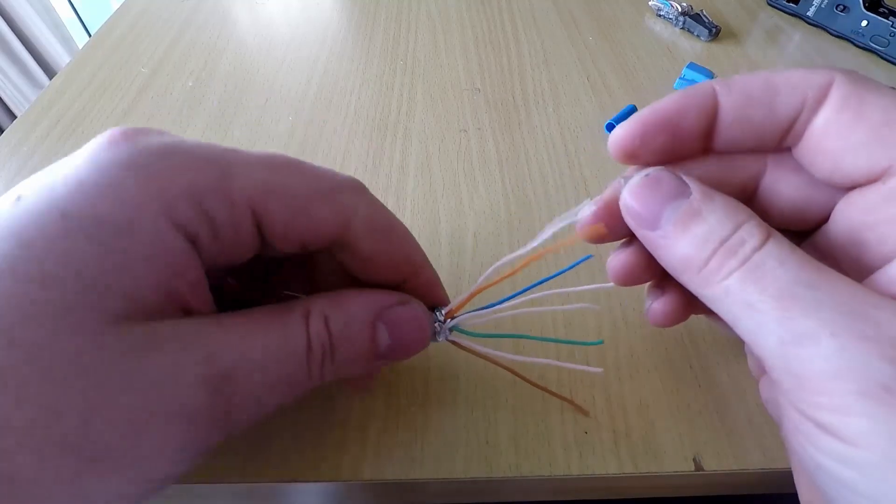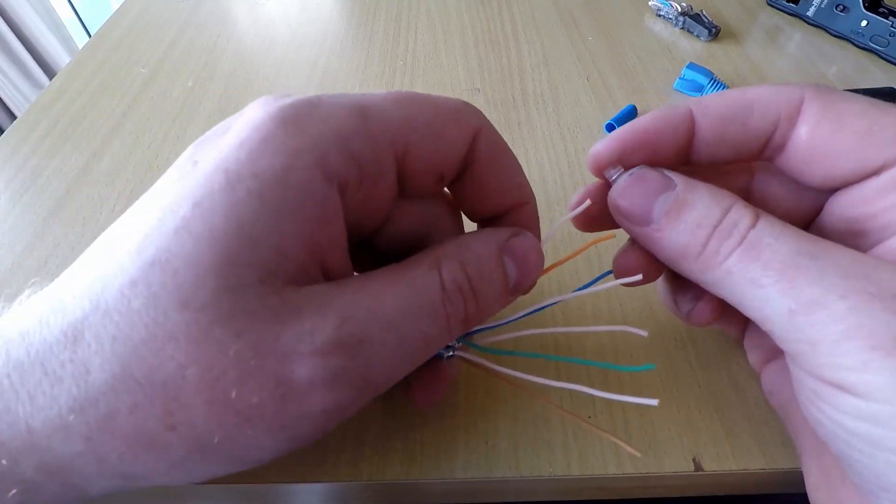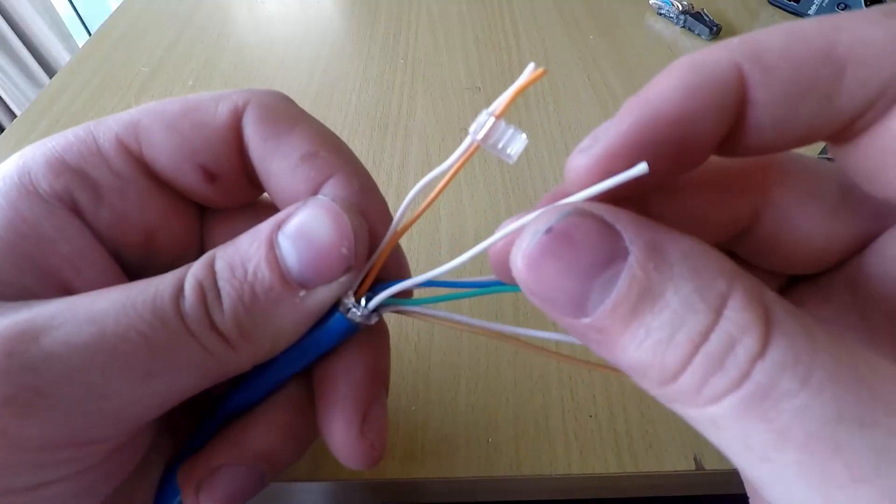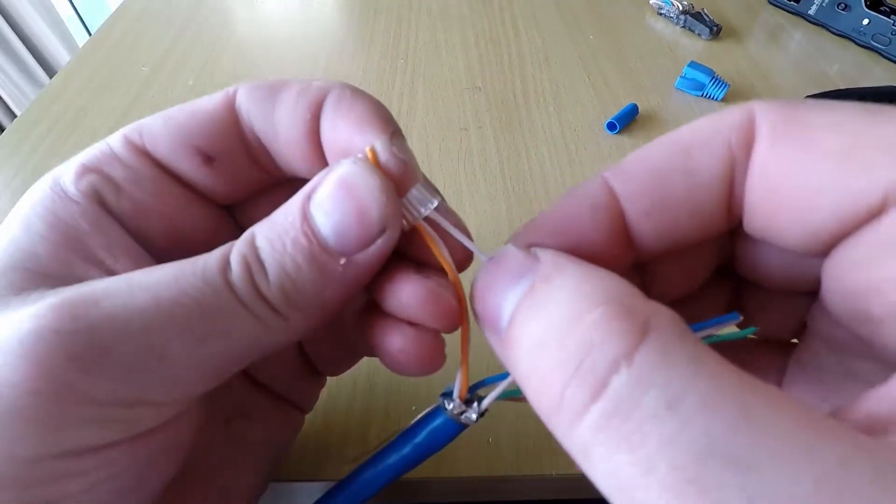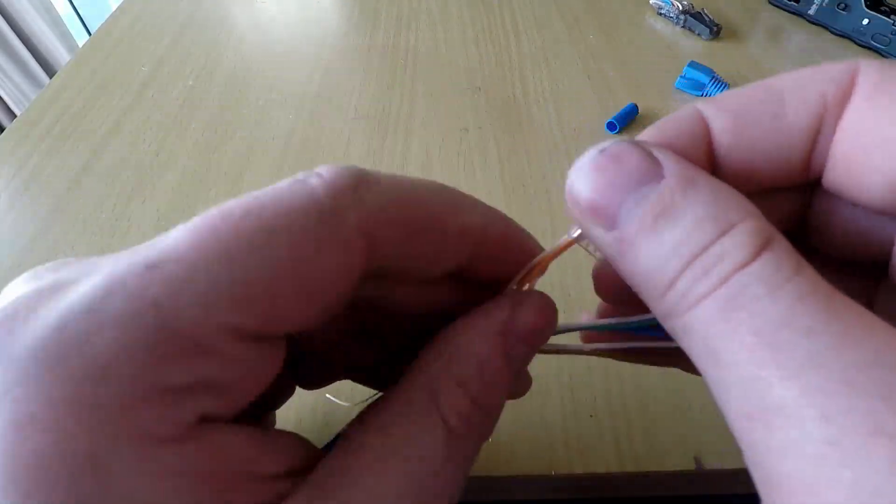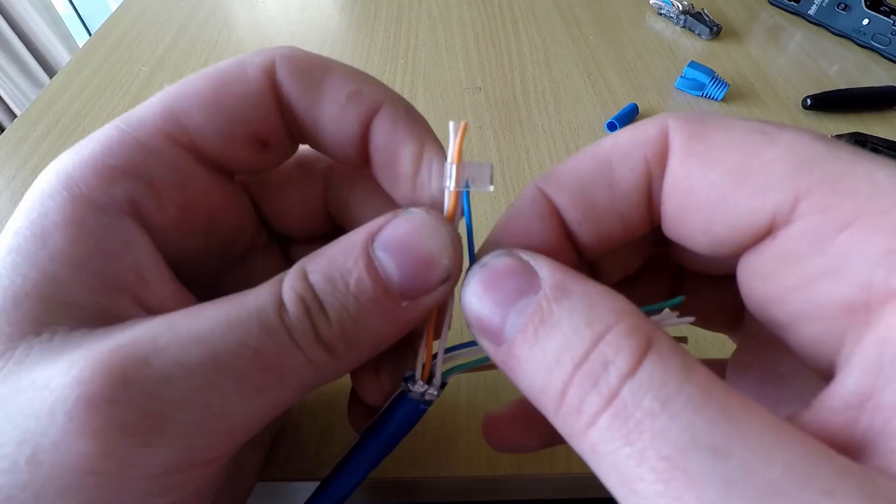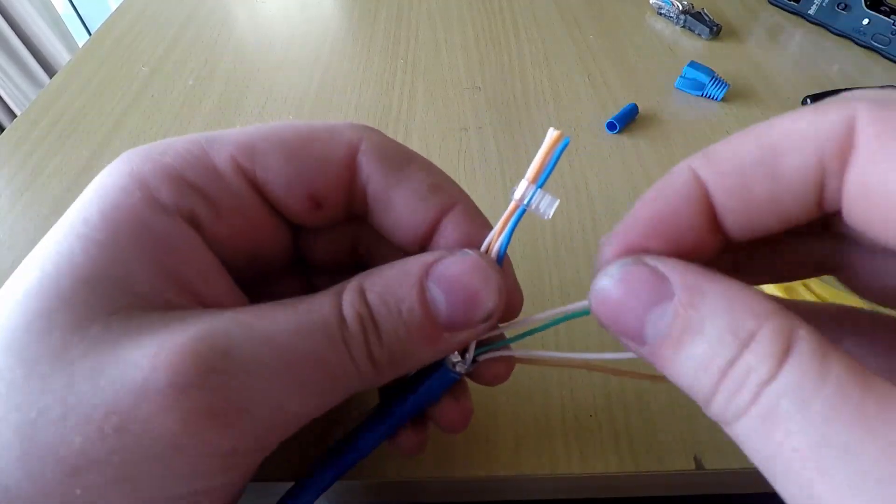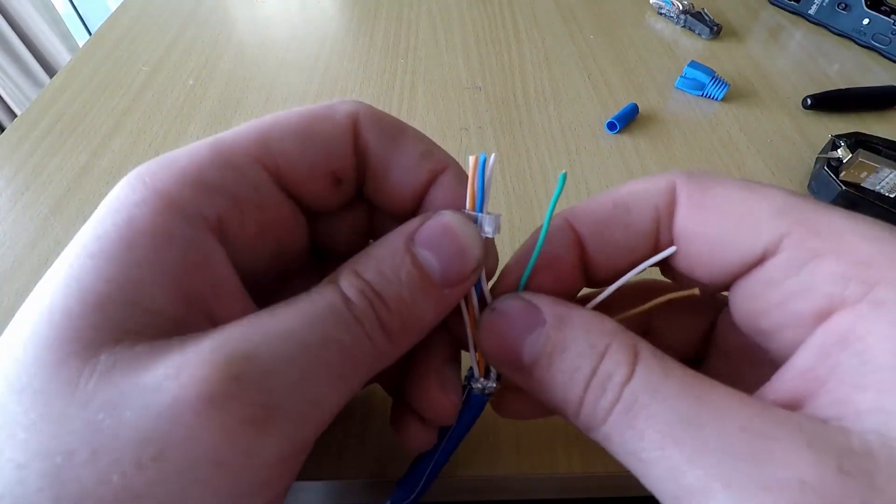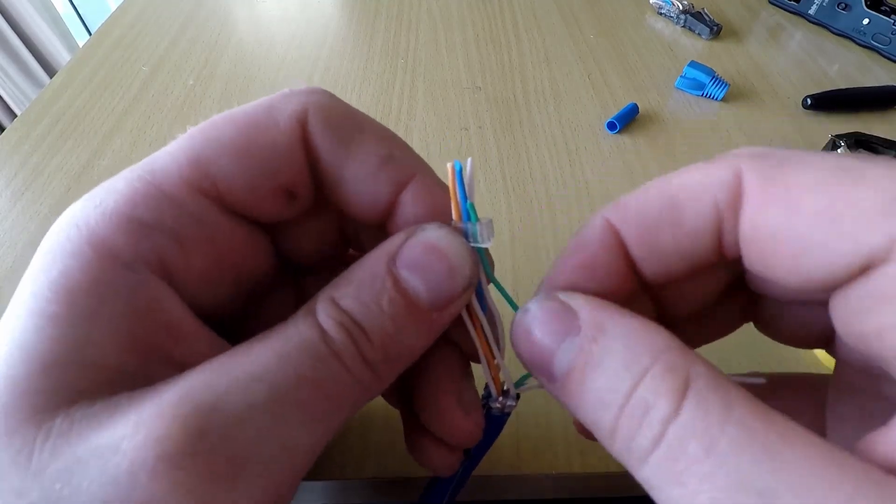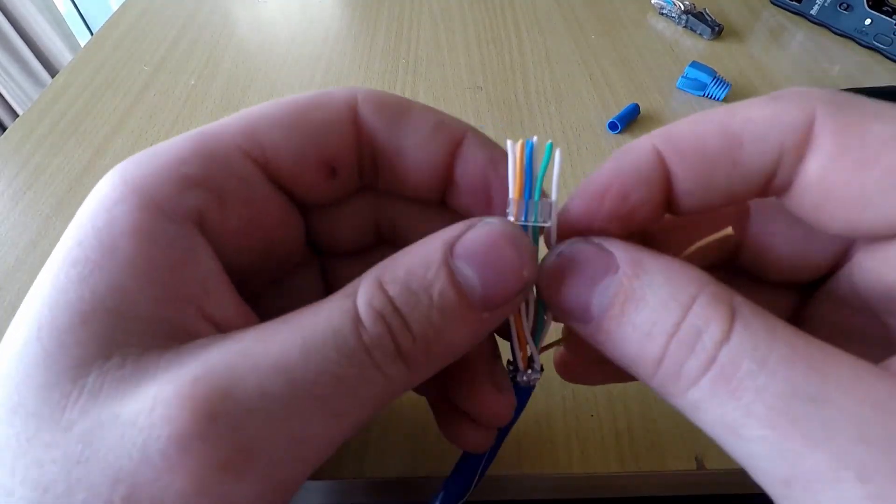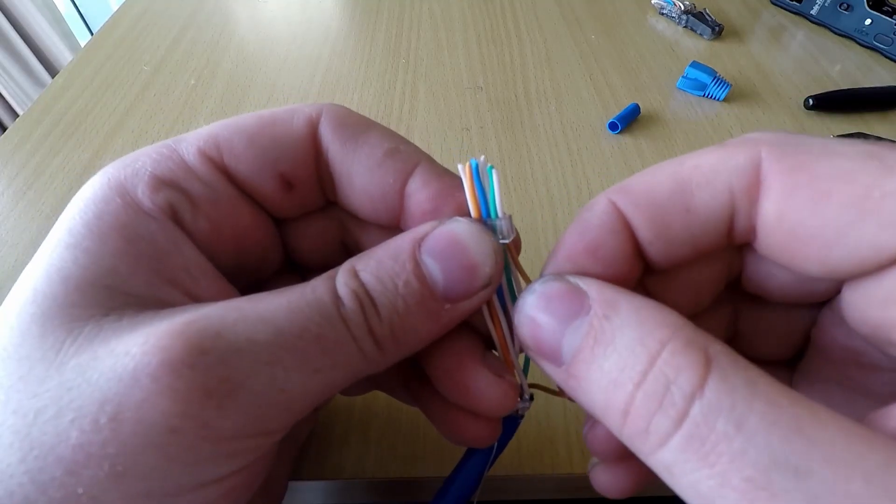For type B, we go orange, white, and then orange. Then we go green, white. Then we go green, brown, white, and brown on the end.